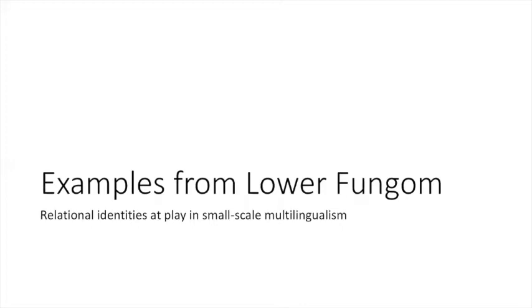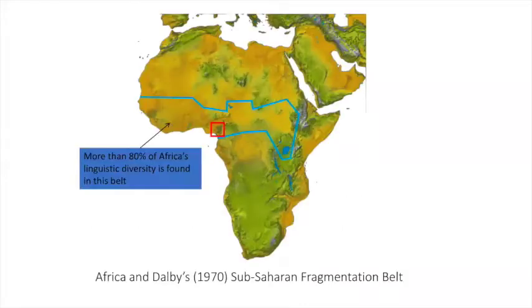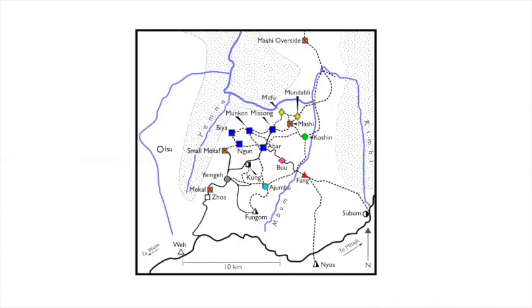Let's now get to the second part of this paper. The Lower Fungum is located right in the middle of the so-called sub-Saharan fragmentation belt — a micro-region in which one can find about 80% of Africa's linguistic diversity. Lower Fungum is right along the border between Cameroon and Nigeria. With a density of about one language per 30 square kilometers, Lower Fungum represents an extreme in the linguistically already highly diverse Cameroon grassfields. This map represents the linguists' perspective on the languages of Lower Fungum, which recognizes between seven and nine local languages and a number of local dialects, such as in the case of Mung Bam, which is considered as including five local varieties.